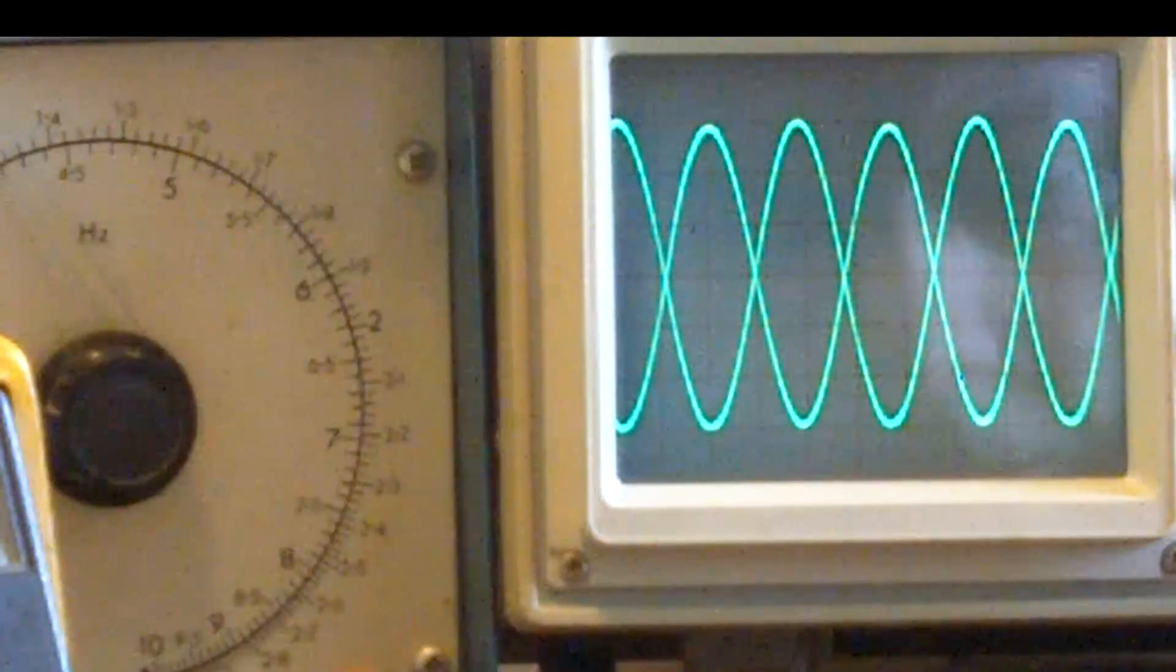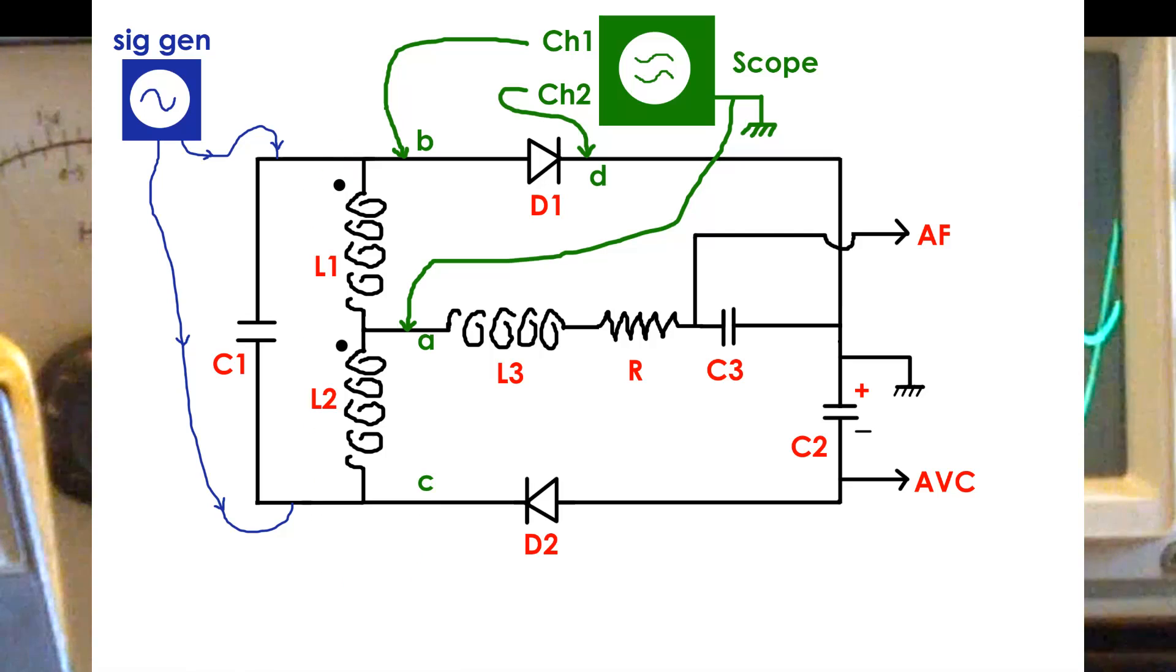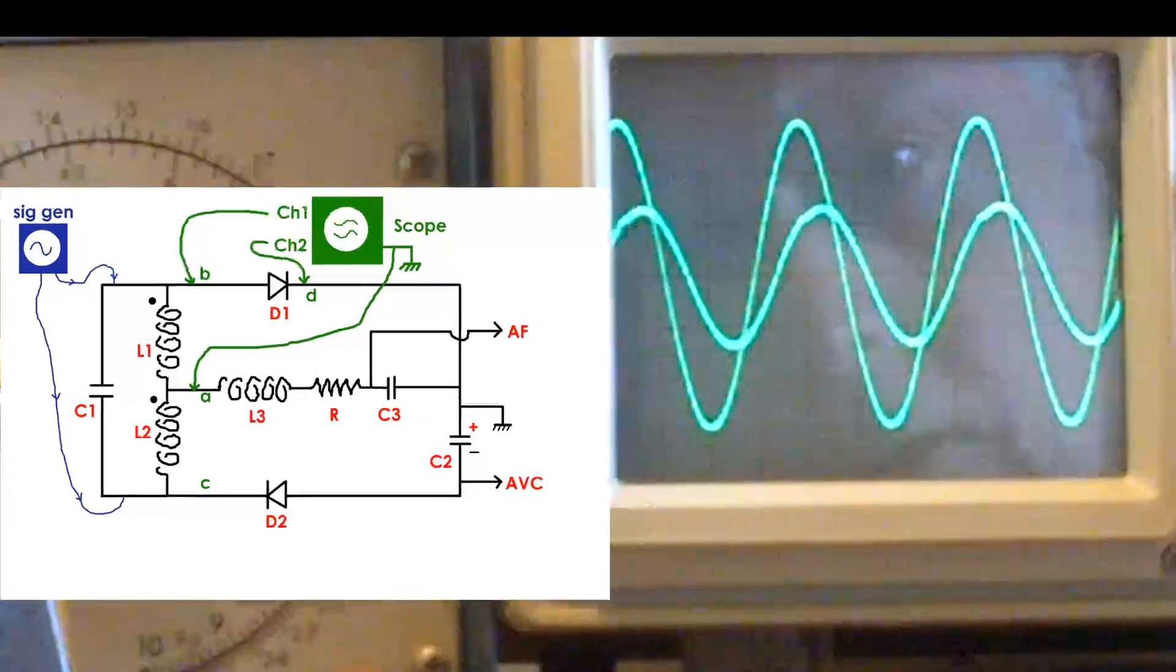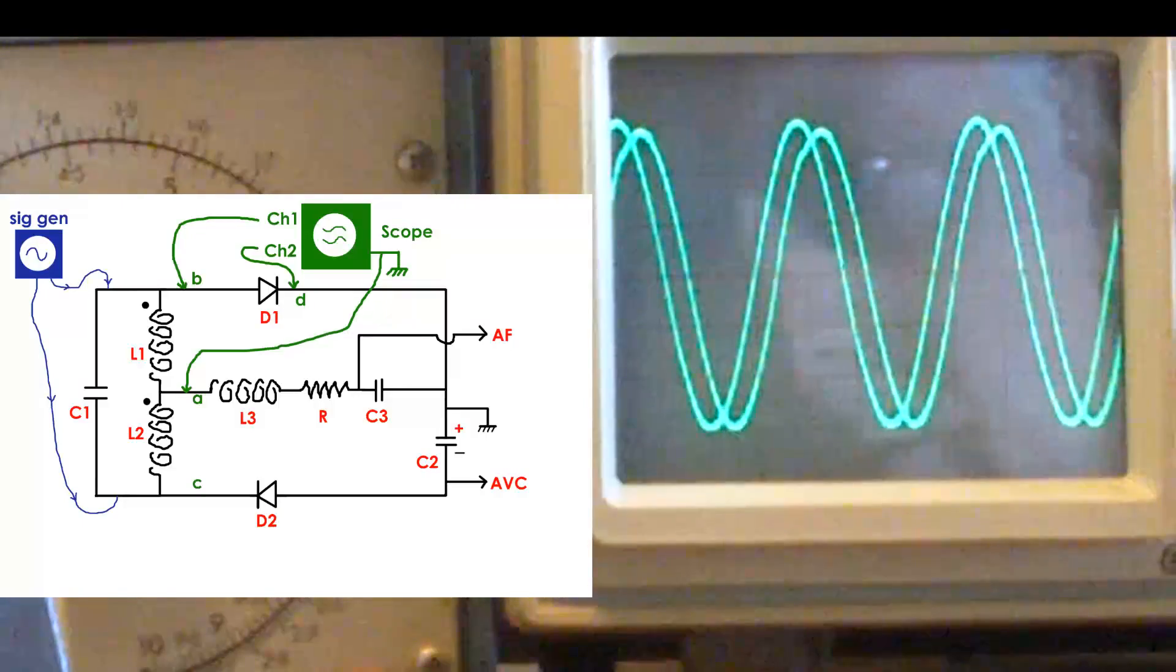Now I'm going to change the position of the second trace. I've now connected the second trace to position D. So I'm now looking at the other side of the diode. And I'll just put a bit of gain on there and make them both the same height.